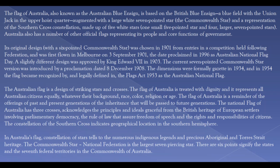Australia also has a number of other official flags representing its people and core functions of government. Its original design, with a six-pointed Commonwealth Star, was chosen in 1901 from entries in a competition held following federation, and was first flown in Melbourne on September 3, 1901, the date proclaimed in 1996 as Australian National Flag Day.